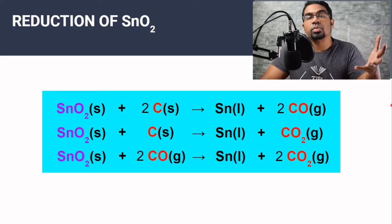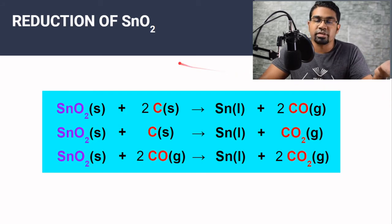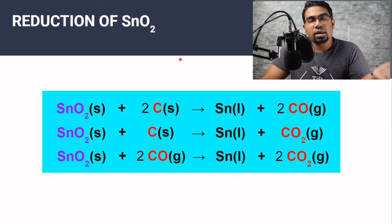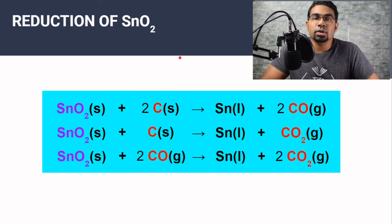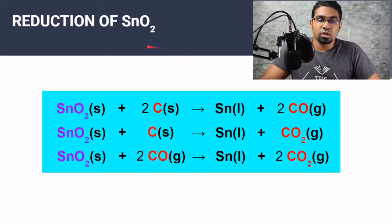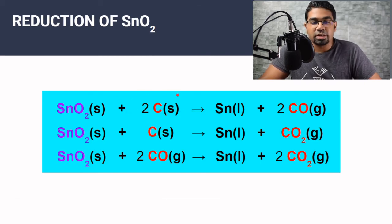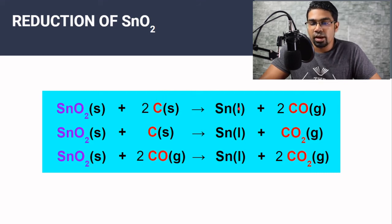Once we obtain the purest form of tin(IV) oxide we can get, we go on to the reduction process using carbon. This is normally done in a furnace — you can refer to my video on the extraction of iron for more detail on the blast furnace. Carbon acts as the reducing agent: when it reacts with tin(IV) oxide, tin comes out and carbon monoxide and carbon dioxide are produced.